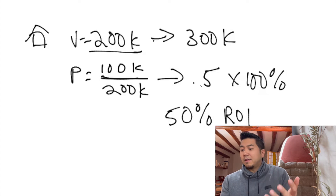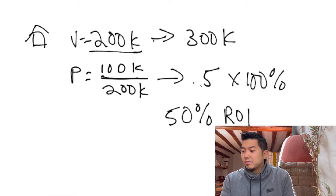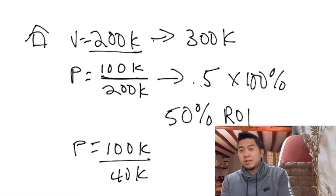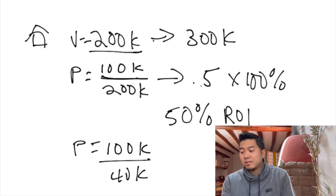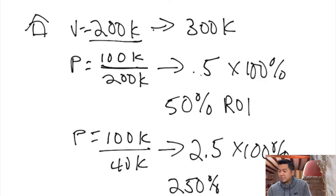What is amazing about real estate is that you don't need to put $200,000 down. What would it look like if you put 20% down? Typical investment properties require 20% down — 20% of $200K is $40,000. So your profit is still $100,000 but your investment was only $40,000. That gives you 2.5, times 100% — this property returned 250% on your money. That's the beauty of real estate.